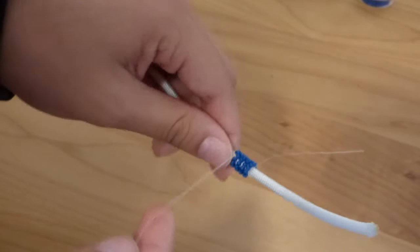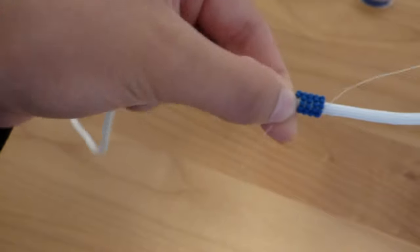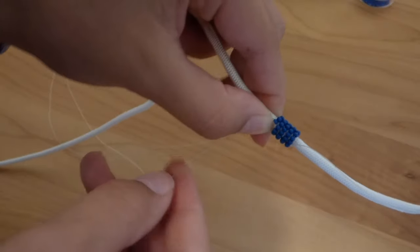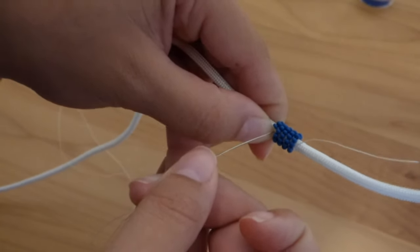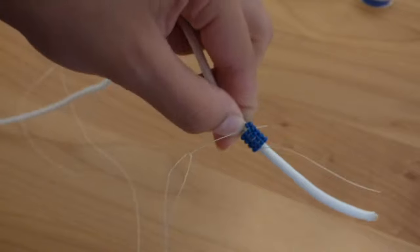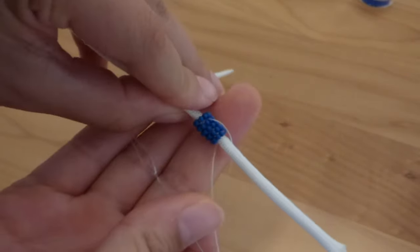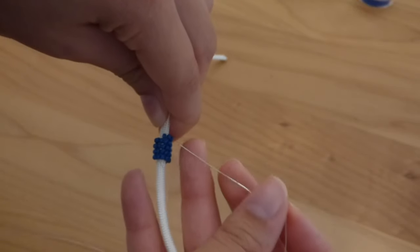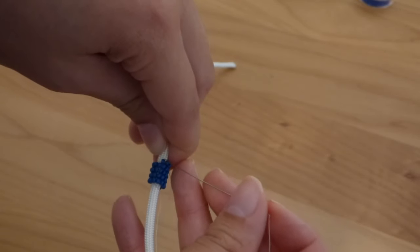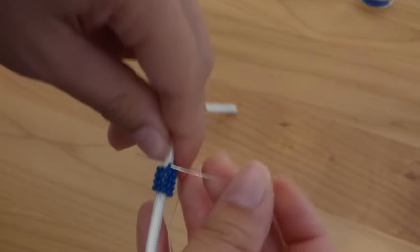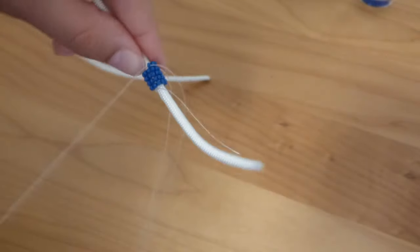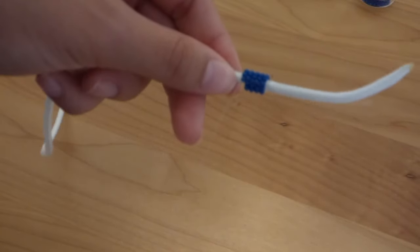And then once you get to the end, hold this thread down with that other hand. You're going to take your needle, you're going to stick it right where you ended, and pull all the way through just like that. Then you're going to go back and stick your needle right through the last bead of your wrap and pull all the way through. So it should look something like this.